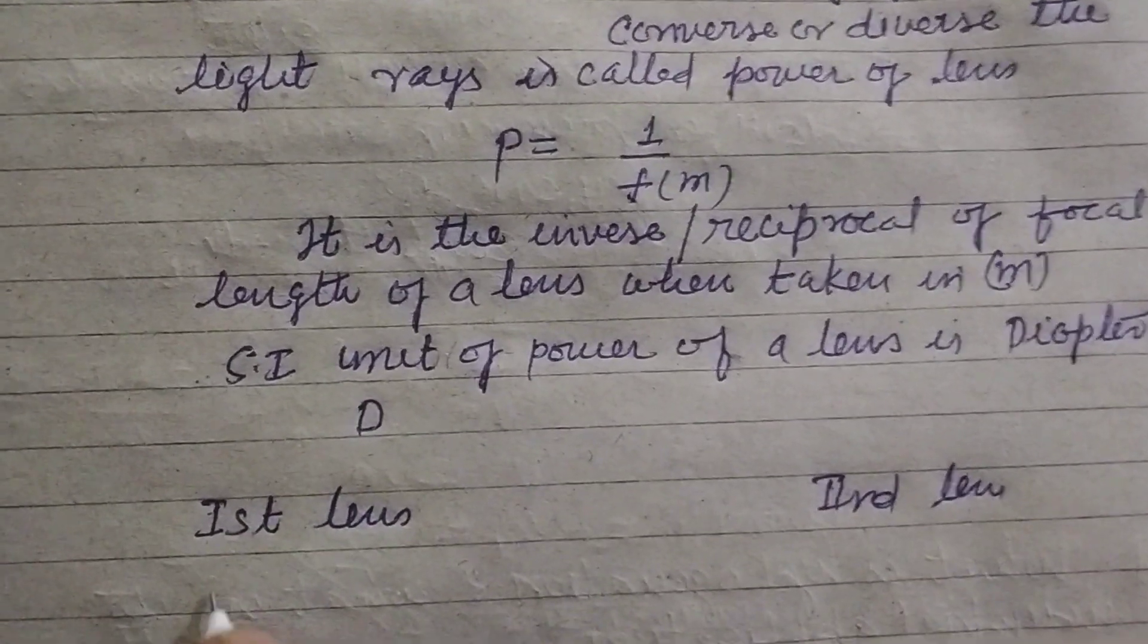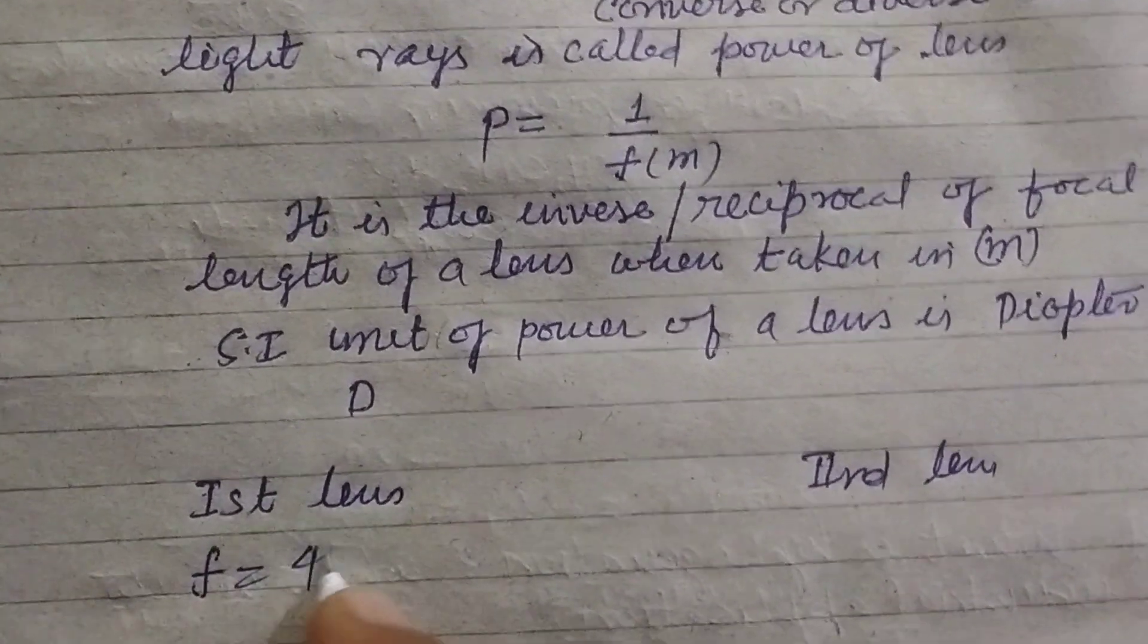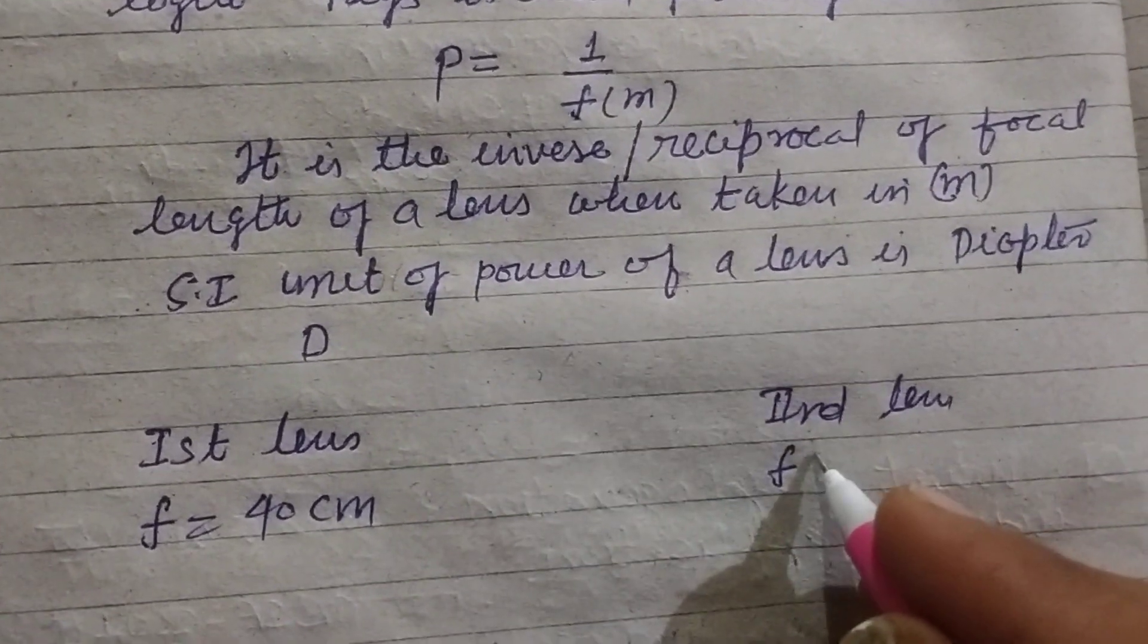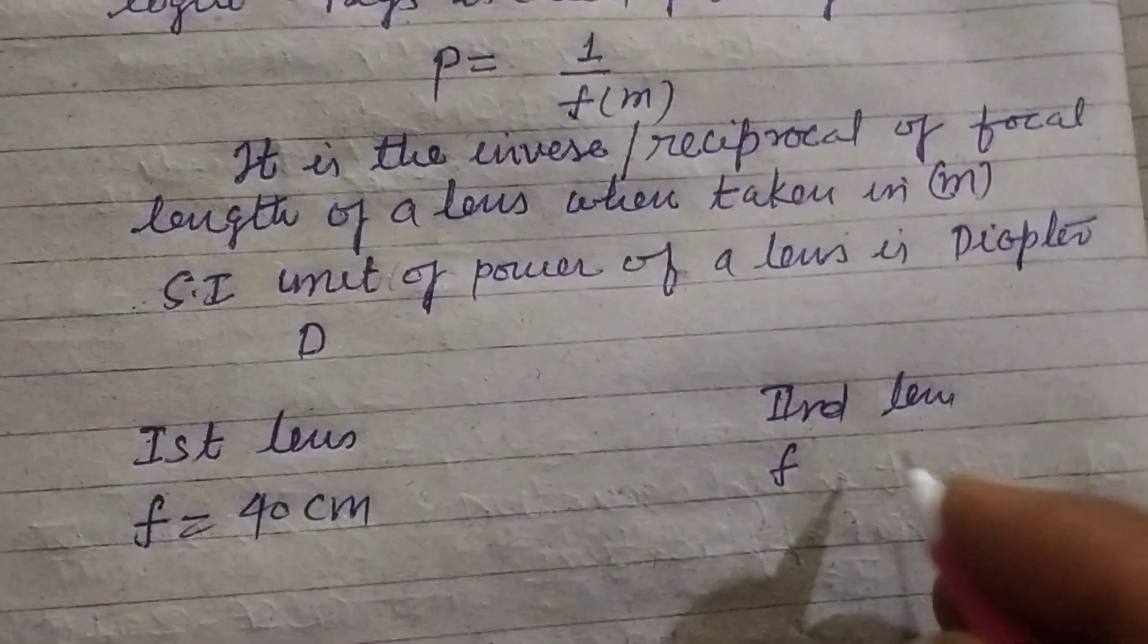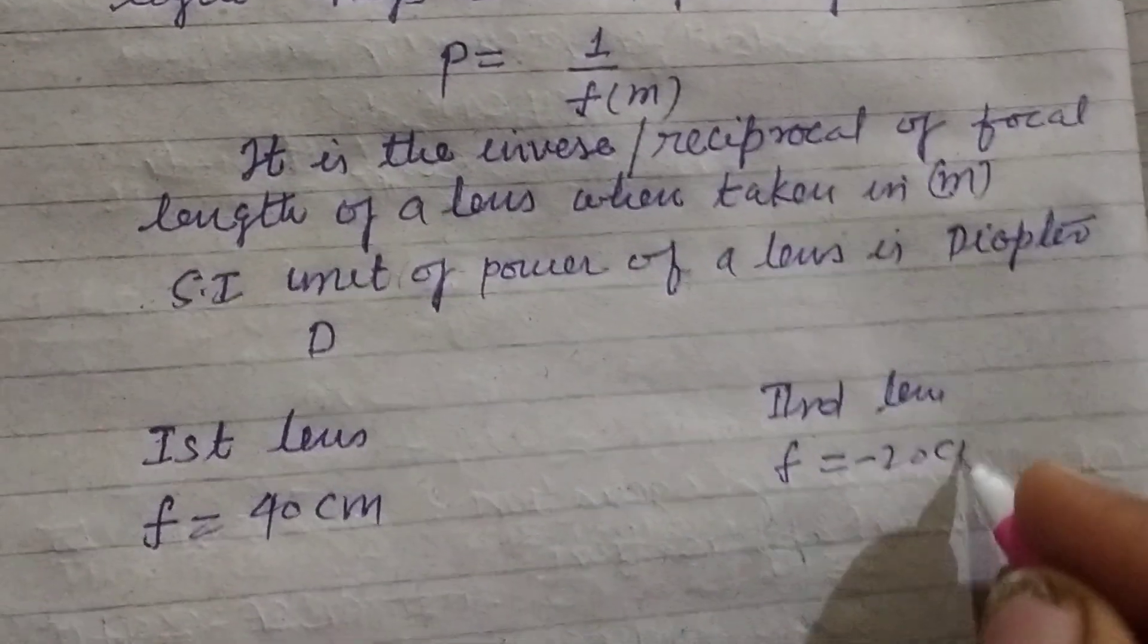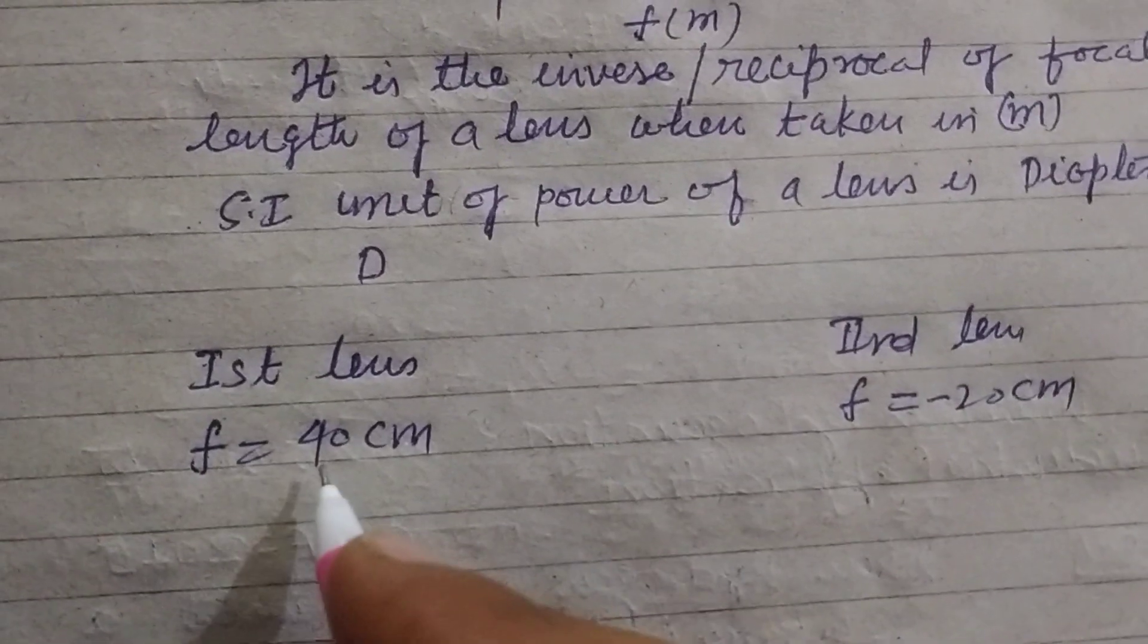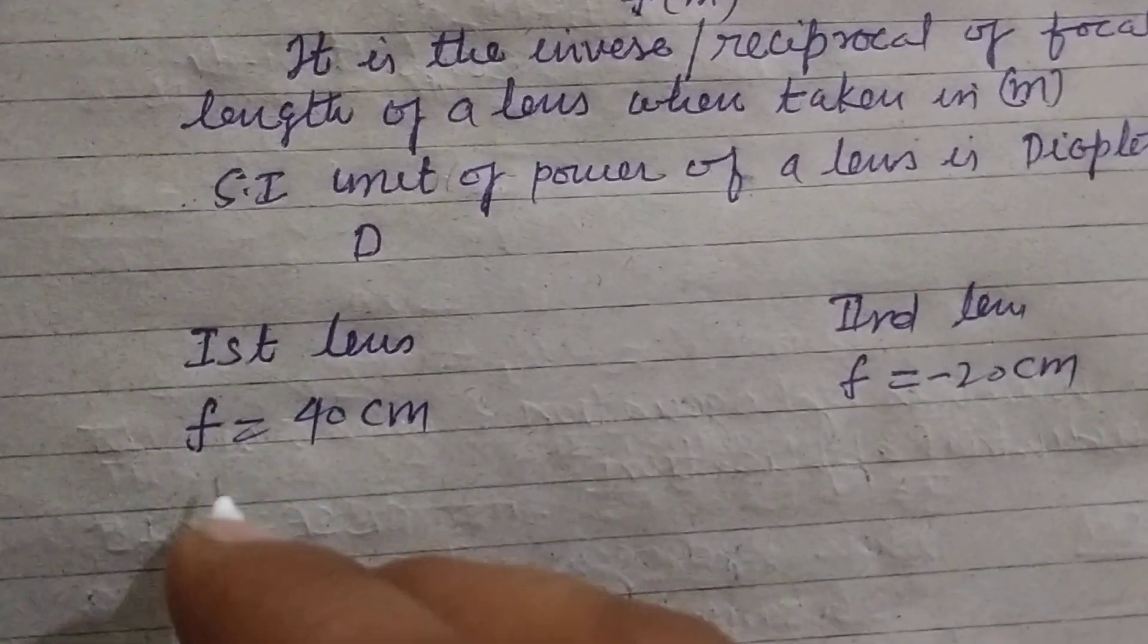Here focal length F is given as 40 cm positive and F is given 20 cm negative. So you know that lens which have positive focal length, which have positive focal length is convex.